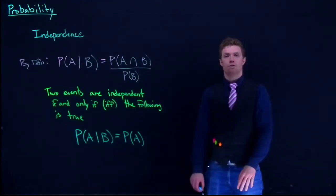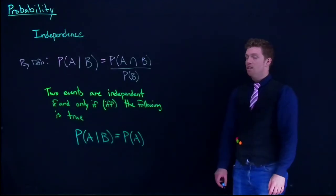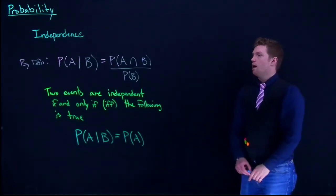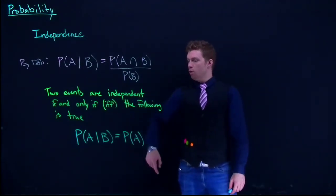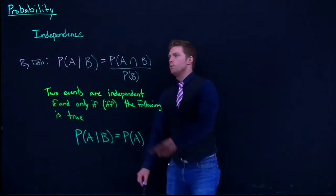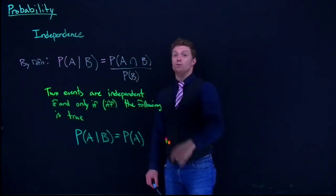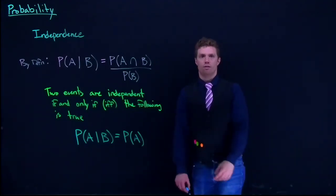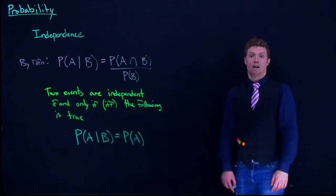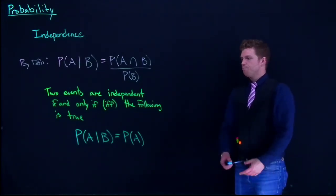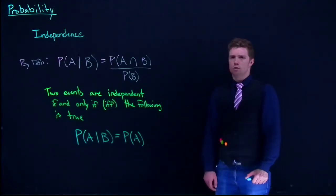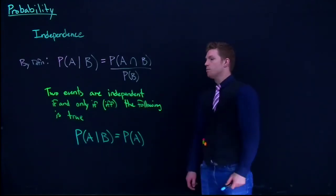A lot of people conflate independence with mutual exclusivity, but that is not true — not even close. With independent events, event B doesn't affect event A. With mutually exclusive events, the intersection is zero. Mutually exclusive events are in fact dependent events, except in really weird situations where the probabilities of the events are zero.